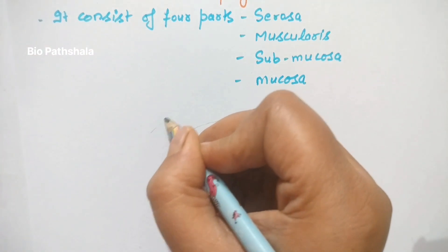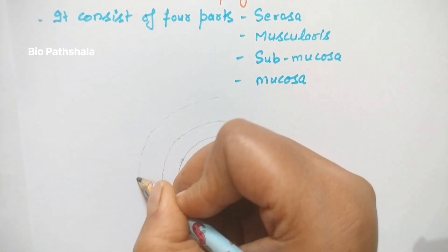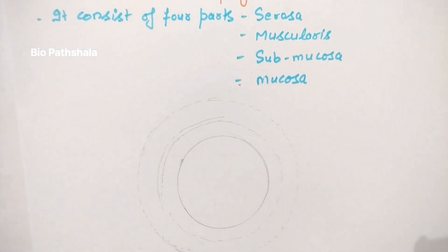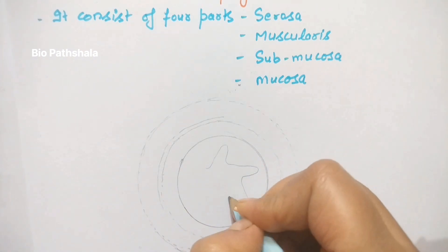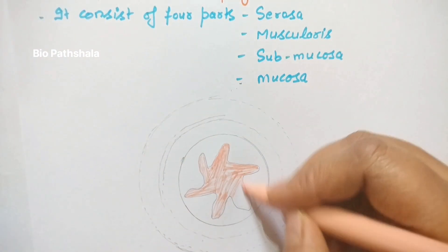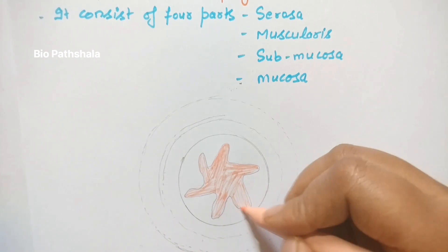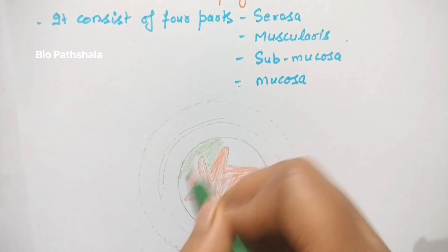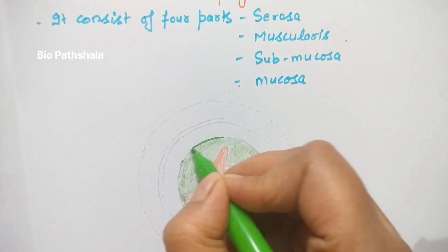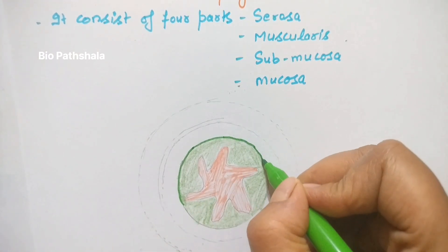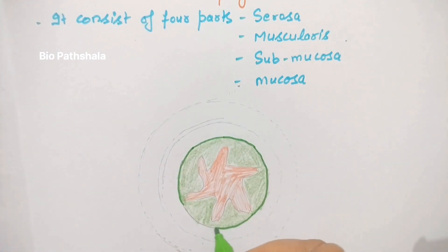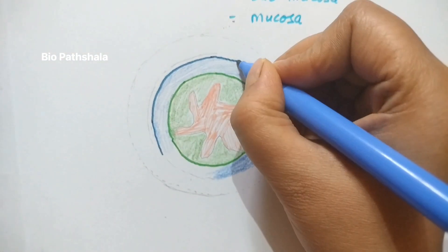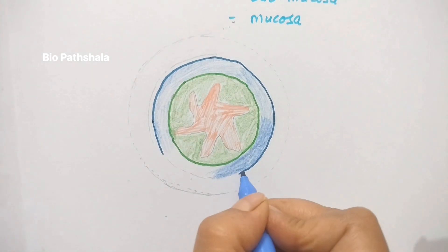If you remember from the Digestion and Absorption first lecture, the alimentary canal was explained. The meaning of canal is like a water channel — water moves from one destination to another. In the same way, food travels from mouth to anus, and along this path there will be digestion and absorption. That is the meaning of canal.